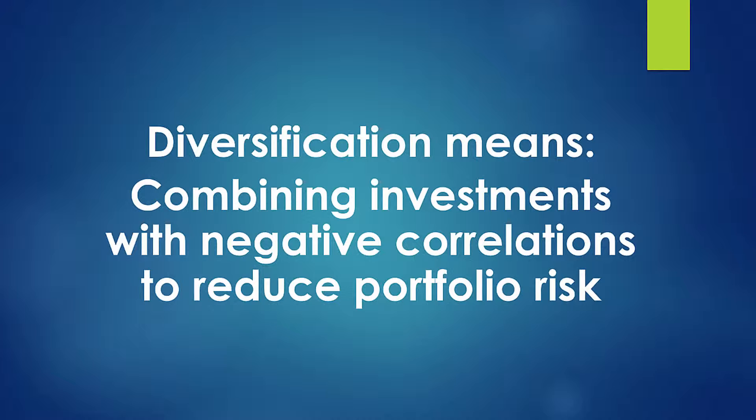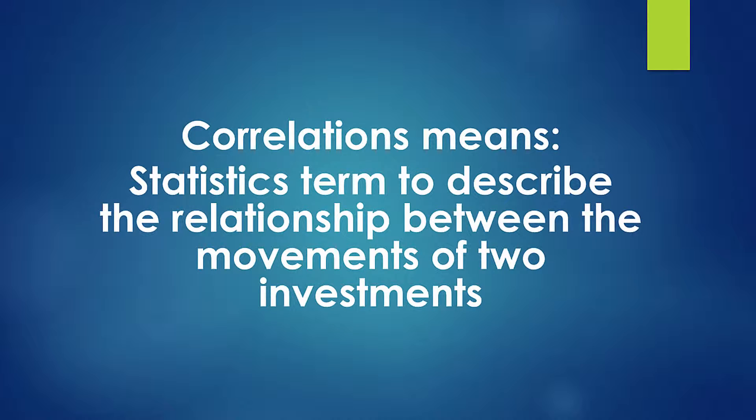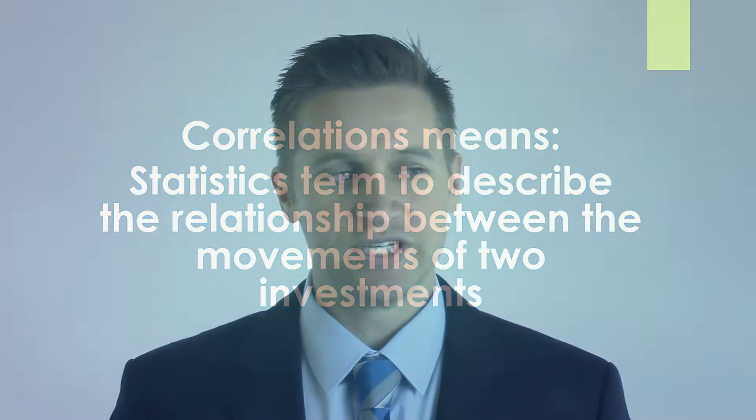When we look at this definition, we realize it's all about negative correlations. So what is a correlation? Correlation is a term from statistics that refers to the description of the movement of two investments. You run a linear regression analysis and one of the outputs is called the correlation coefficient. These correlations describe how two investments move compared to each other, and you get a range between positive 1 and negative 1.